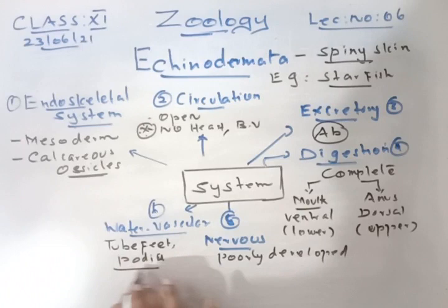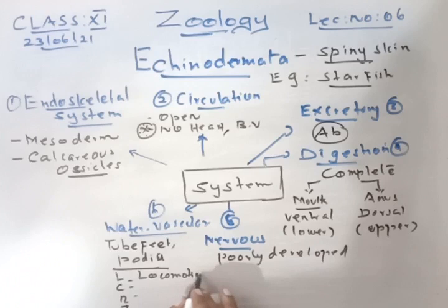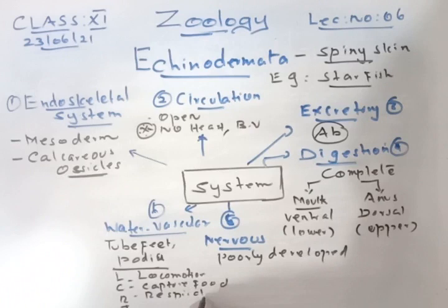Remember LCRT for the roles of the water vascular system: L for locomotion, C for capturing food, R for respiration, and T for transport of food.